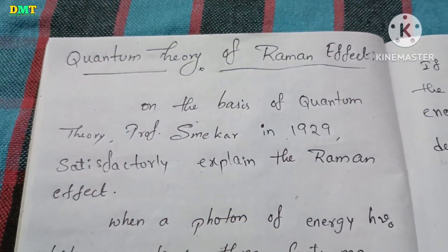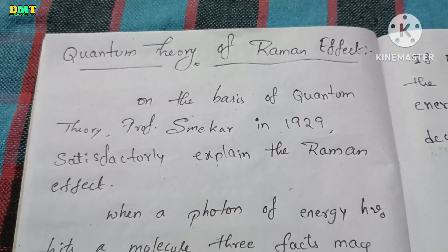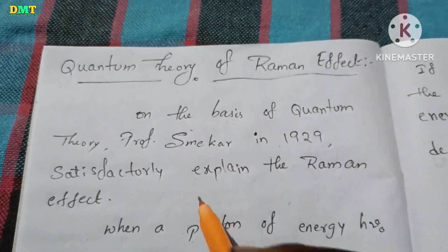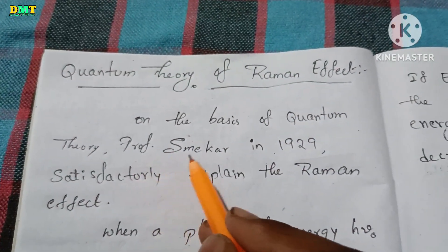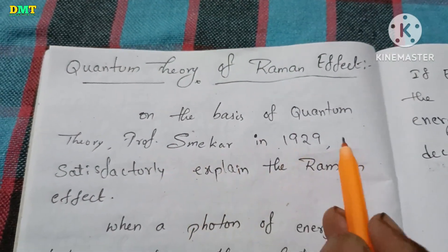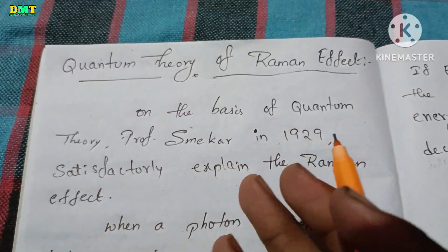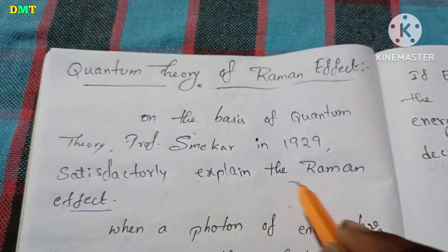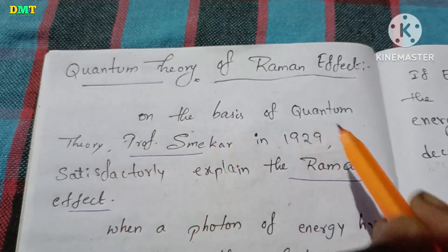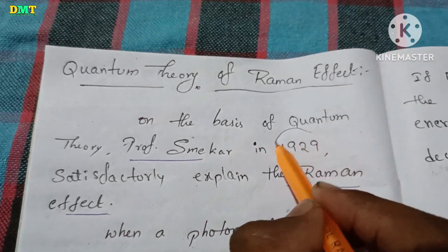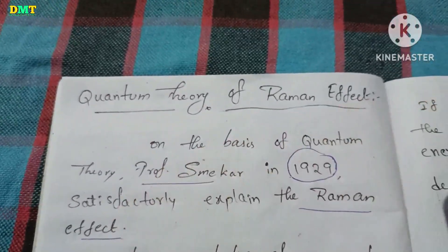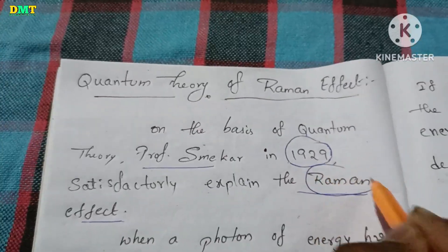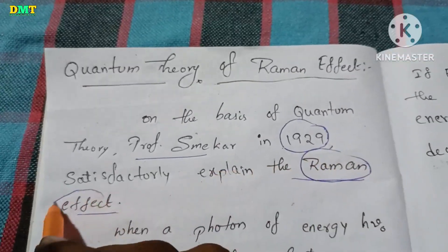Professor Smekal in 1929 satisfactorily explained the quantum theory of the Raman effect. This is a perfect explanation of the Raman effect.